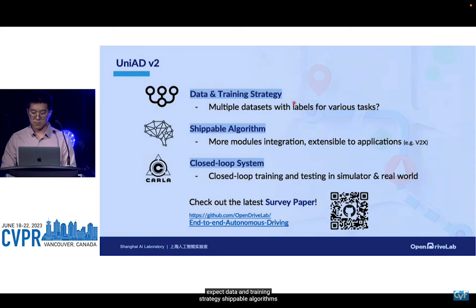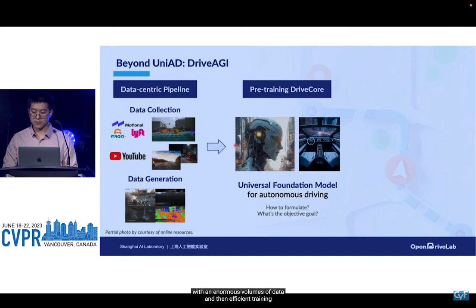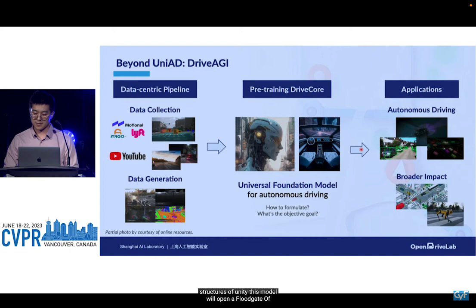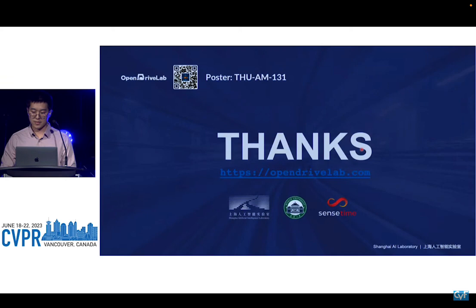If you are interested, please check our latest survey paper. With an enormous volume of data and an efficient training engine, we could construct a universal foundation model for autonomous driving based on the principles and structures of UniAD. This model would open a floodgate of applications extending to a broad range of robotics — a future where machines interact, navigate, and perform tasks with an unprecedented level of autonomy and intelligence. Let's walk towards this brave new world together. Thank you for your attention. Please refer to our paper for more details, and our poster session is on Thursday morning.